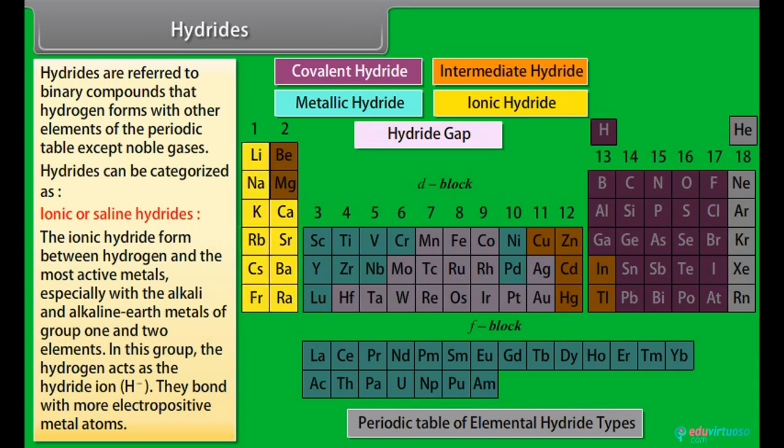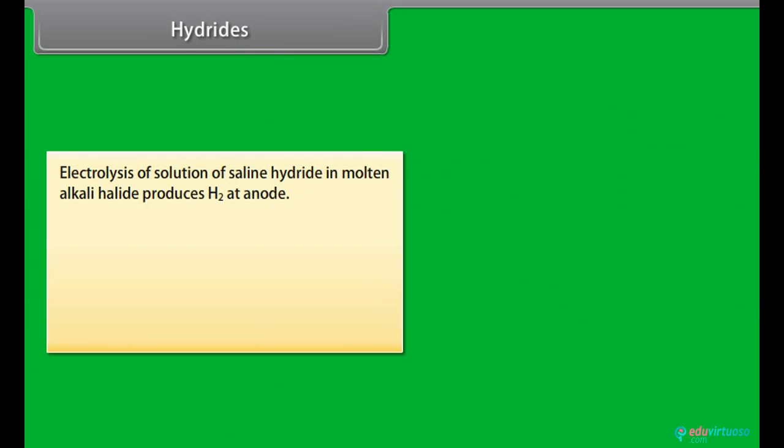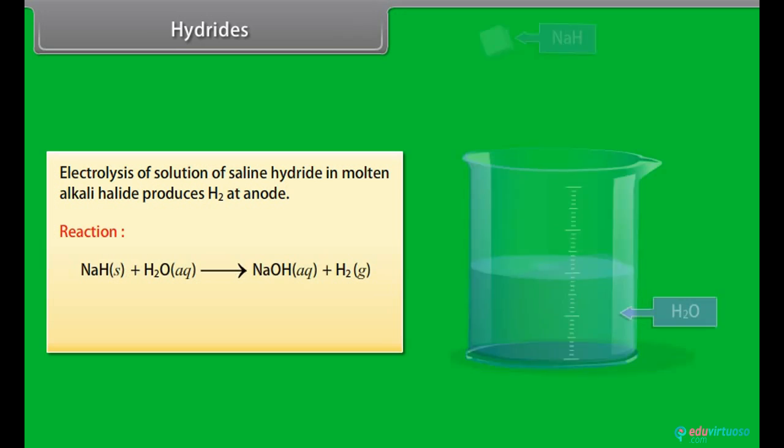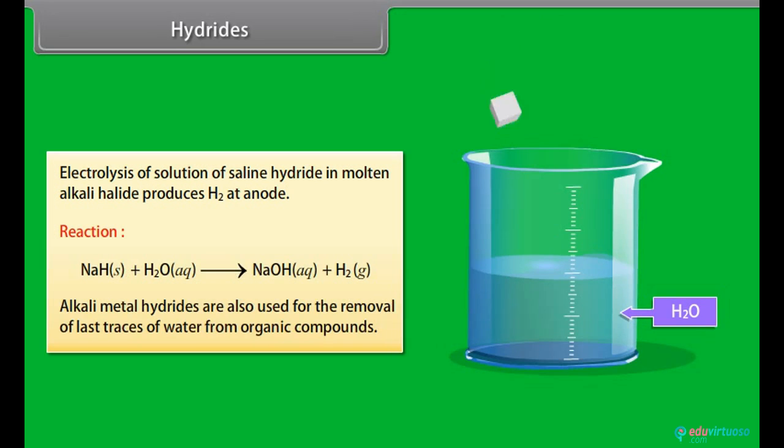They bond with more electropositive metal atoms. Electrolysis of solution of saline hydride in molten alkali halide produces H2 at anode. Alkali metal hydrides are also used for the removal of last traces of water from organic compounds.